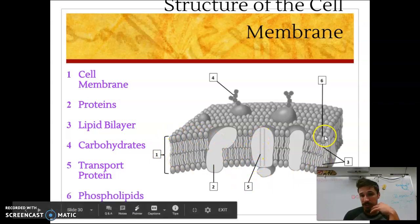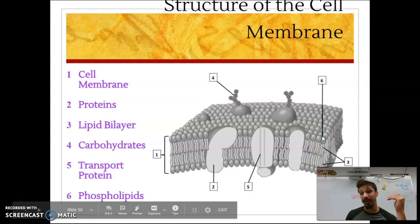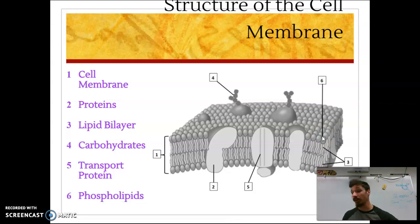And ultimately, number six, I told you that membranes are made of lipids. Well, when it comes to the cell membrane, not any other membrane, just the cell membrane, the specific lipid that the eukaryotic animal cell membrane is made of is called a phospholipid. So each one of these little heads with the tail attached, head with the tail attached, head with the tail attached, that is a phospholipid.